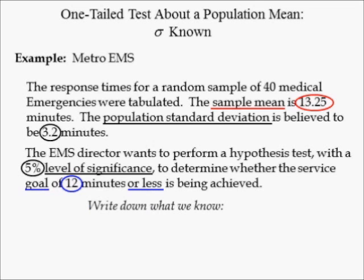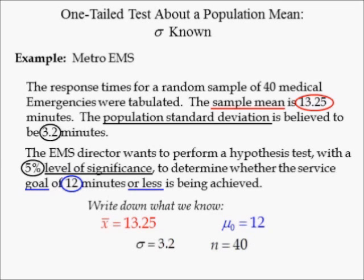First, we want to write down what we know. Sample mean x-bar equals 13.25. The hypothesized population mean is equal to 12 minutes — that's the director's claim. The population standard deviation is assumed to be equal to 3.2 minutes. The sample size was 40 and the significance level we're using is 0.0500.